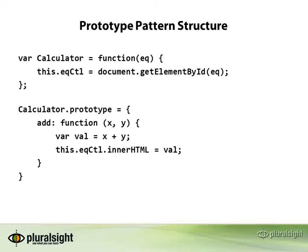That's how you would define a prototype pattern with JavaScript for a calculator object. This is a very simple example — I have a much more robust one coming up in the demos. Now, how would you actually call it? That's the good thing with these patterns: instead of just calling a function directly, we can new up an instance of this calculator, call the constructor, and pass in a different value. From there, we can use the object instance to call into the add function defined within the prototype. This is the basic pattern you'll follow.